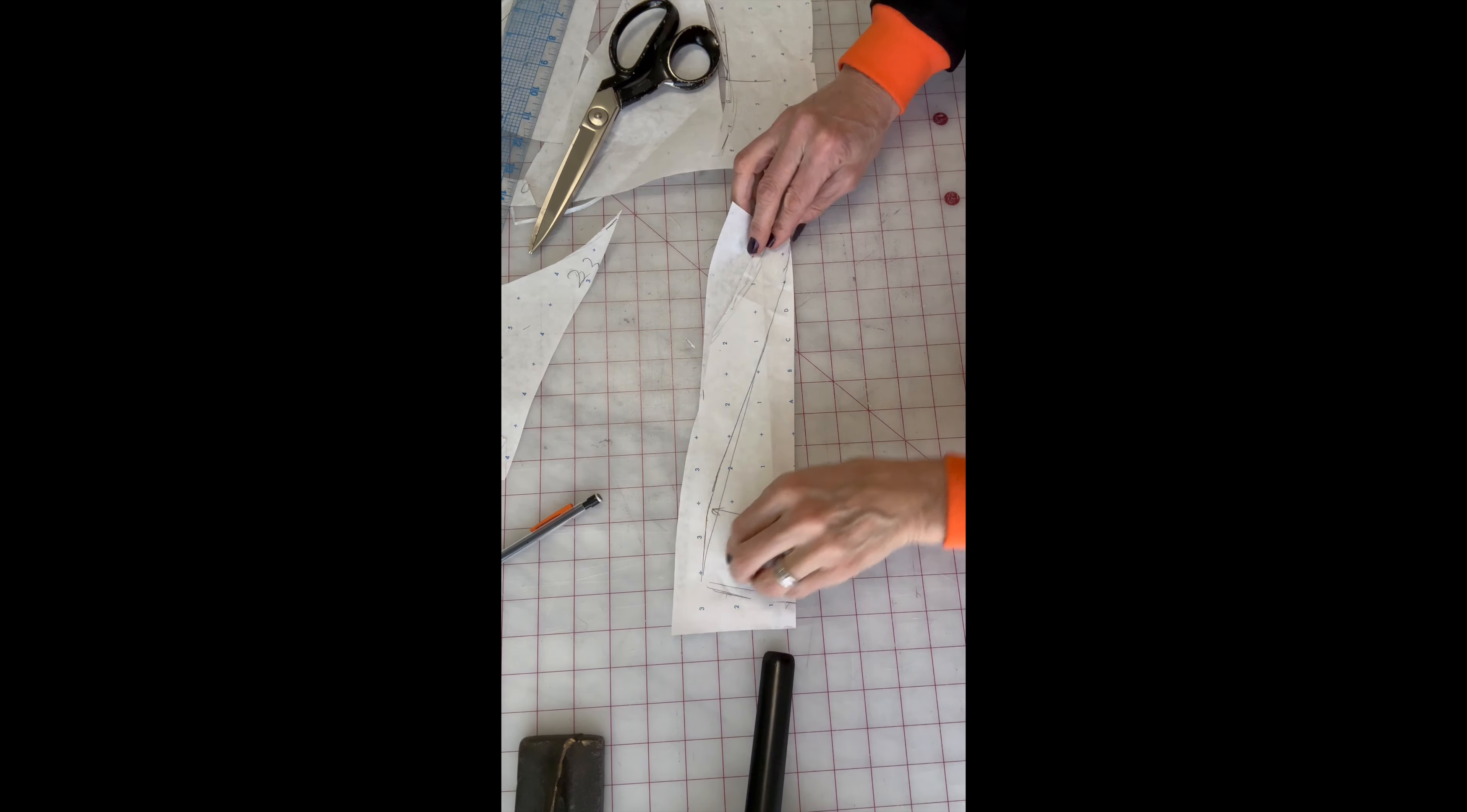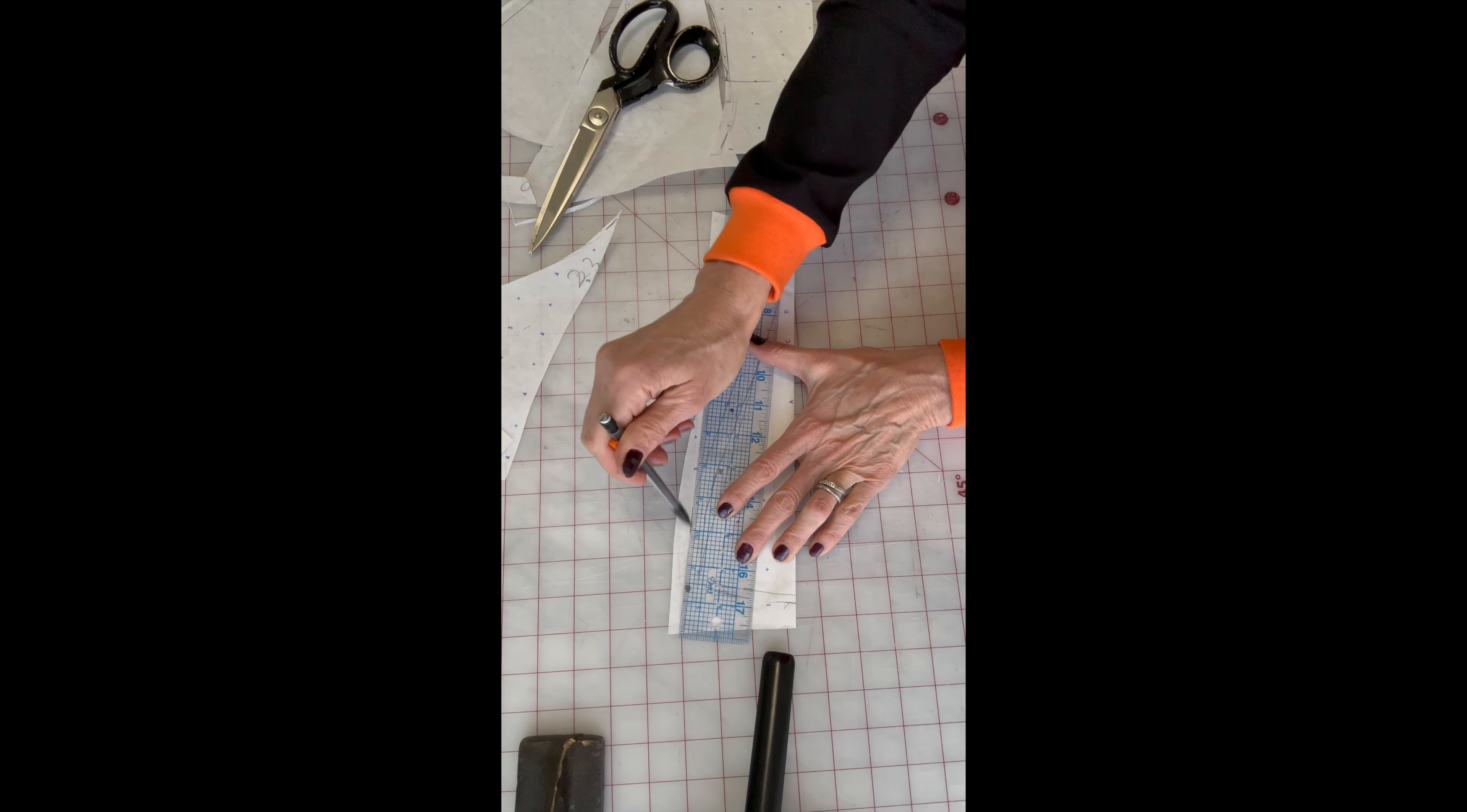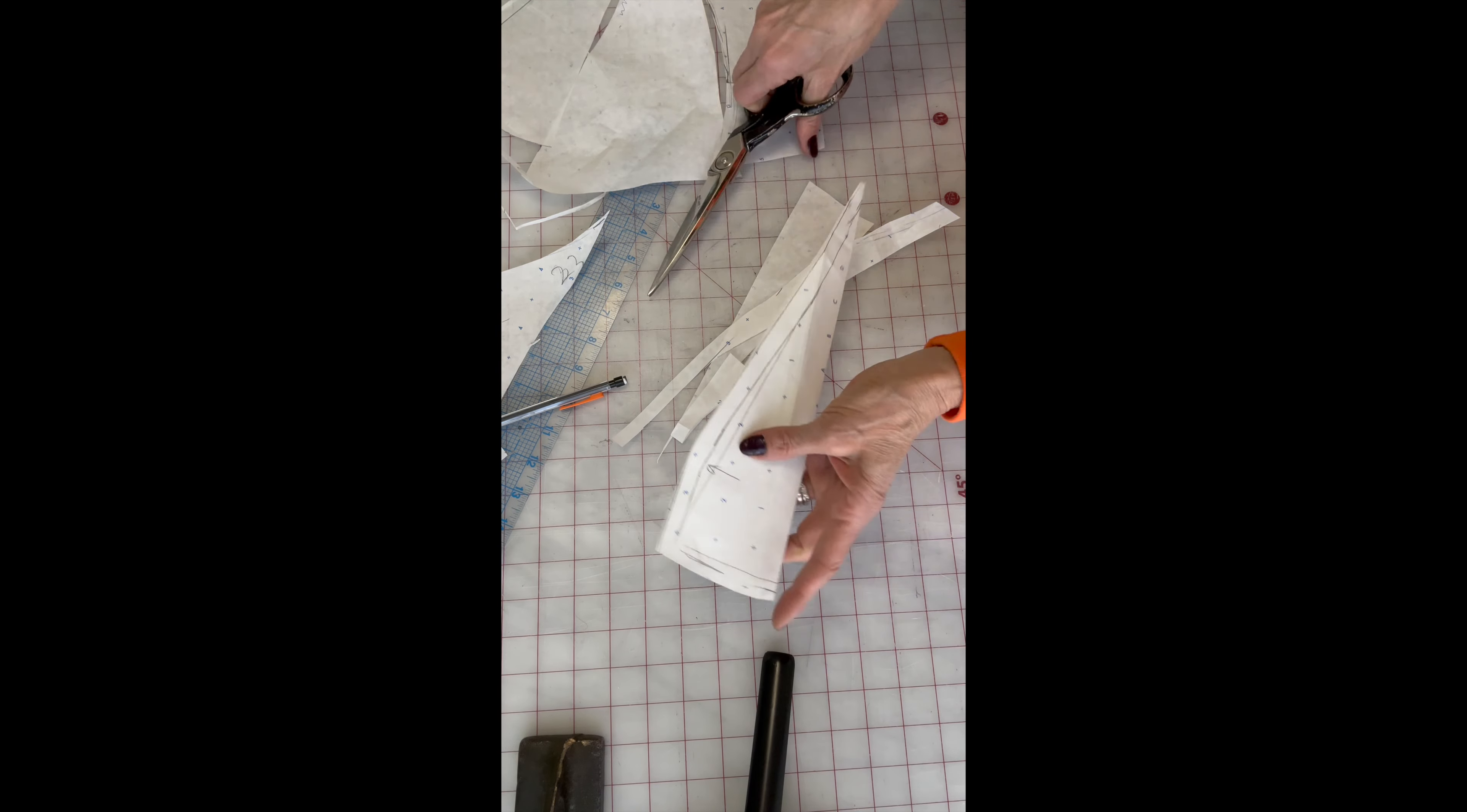Fold in half. And now you can add seam allowances if you want to. Let's add 3/8 inch seam allowances - at the sides and at the bottom.